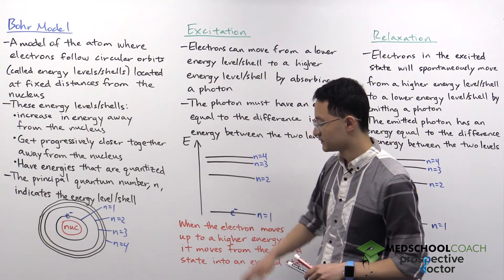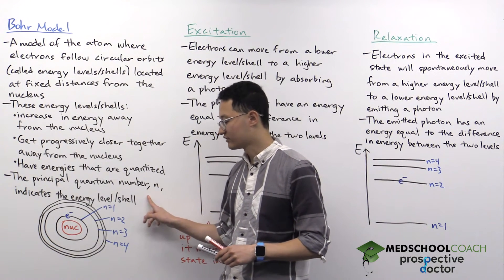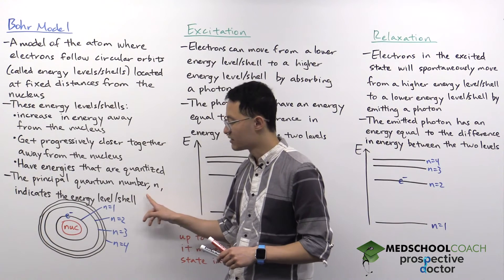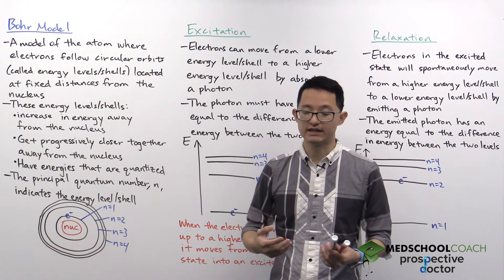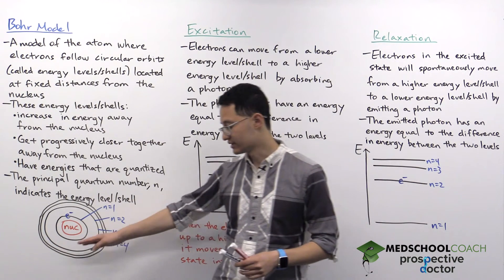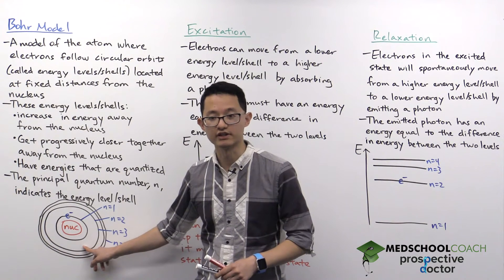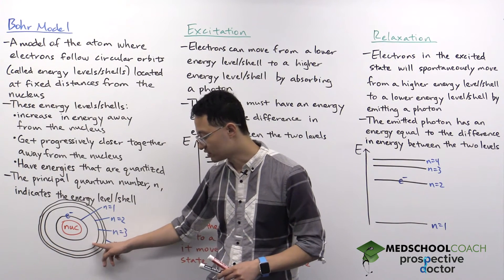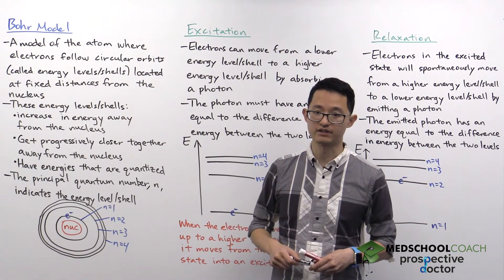One last thing also important from MCAT is that the way we refer to these different energy levels or shells, we do that using the principal quantum number N. N you're probably familiar with, and again, the counting just starts from the nucleus. So the N equals one shell, it's the shell closest to the nucleus. Then you have the N equals two, three, four, and so forth as you move away from the nucleus.